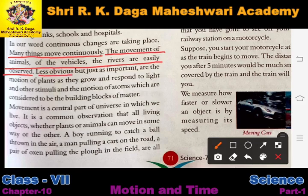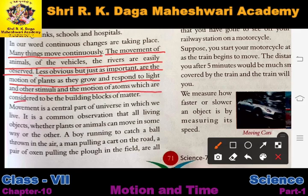Less obvious but just as important are the motions of plants as they grow and respond to light and other stimuli, and the motion of atoms which are considered the building blocks of matter. When plants grow, the number of atoms in their body increases — and that is also an example of motion. When a plant carries out photosynthesis, all these processes are also forms of motion.